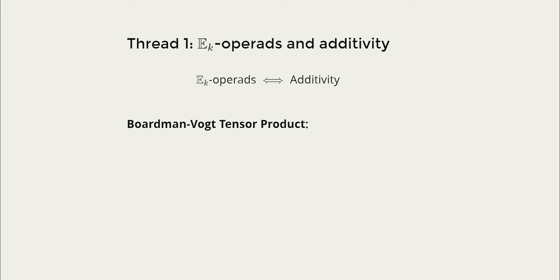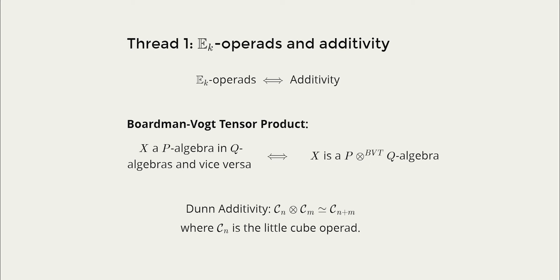For operads there's a tensor product, the Boardman-Vogt tensor product. So without going into details you can think of it as the universal operad that interchanges two operadic structures. So in particular if you have two operads P and Q and X is a Q algebra and a P algebra and vice versa, this is the same thing as saying X is a P tensor Q algebra. So there's a classic result by Dunn that basically says that if you've got two different little cube operads, the tensor of that is the same thing as if you just added the dimensions to the little cube operad.